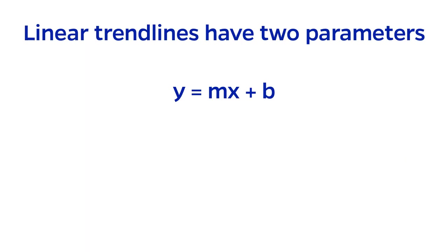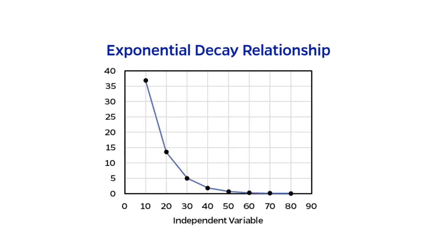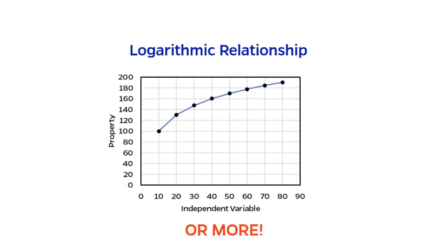Linear trend lines are nice because there are only two parameters, slope and intercept. But of course, not all relationships between variables are actually linear. They may be quadratic, exponential, exponential decay, logarithmic, or more.